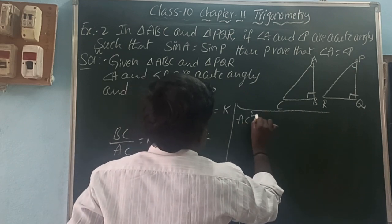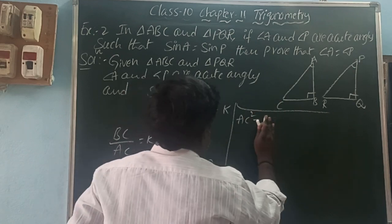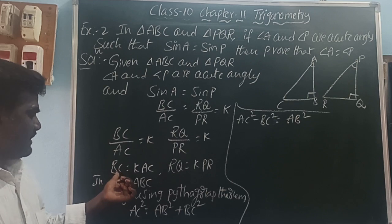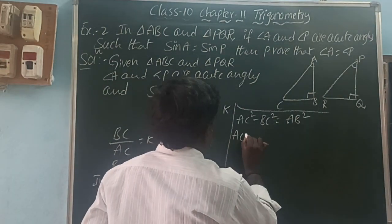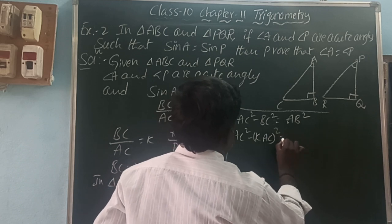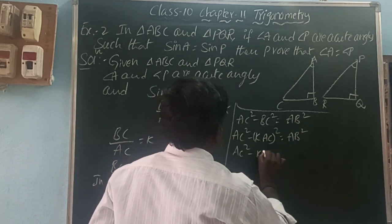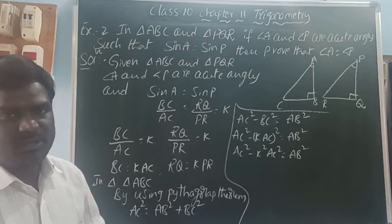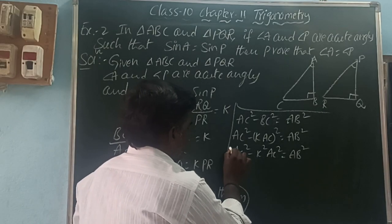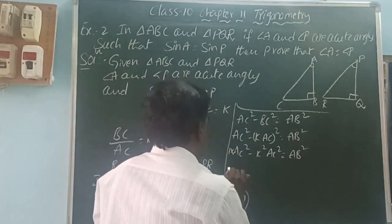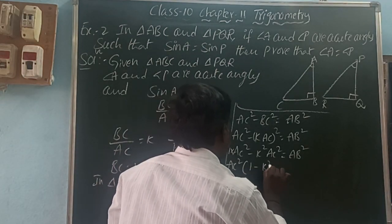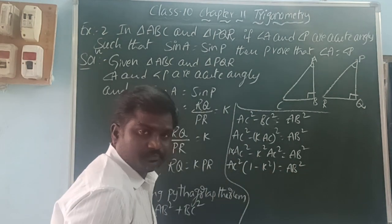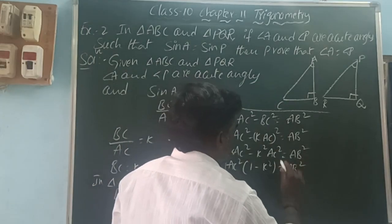In triangle ABC, by the Pythagorean theorem: AC² = AB² + BC². So AC² minus BC² equals AB². Since BC equals k·AC, we have AC² minus (k·AC)² equals AB². So AC² minus k²·AC² equals AB². Taking AC² as common: AC²(1 minus k²) equals AB². This is equation 1.